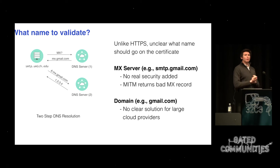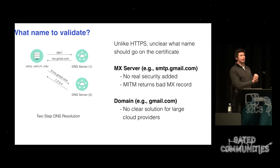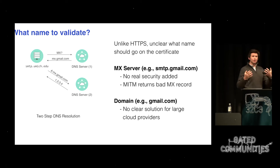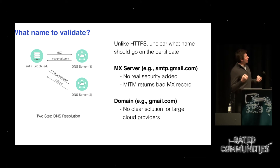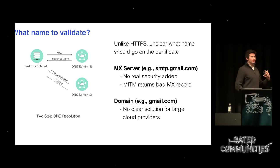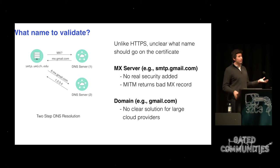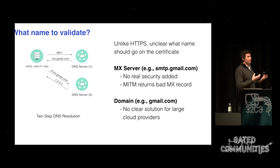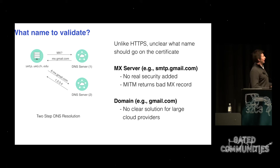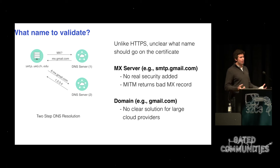Anders als bei HTTPS: wenn eine E-Mail an gmail.com geht, schaue ich mir den MX-Record an und bekomme eine Liste von Namen, zum Beispiel smtp.gmail.com, und dann mache ich einen zweiten Lookup für die IP-Adresse von smtp.gmail.com, und das ist dann wo ich meine E-Mail hinschicke. Man kann das Zertifikat auf den eigentlichen SMTP-Servern tun, oder für die Domain gmail.com – aber der Name des Servers zu schützen nützt eigentlich nichts.